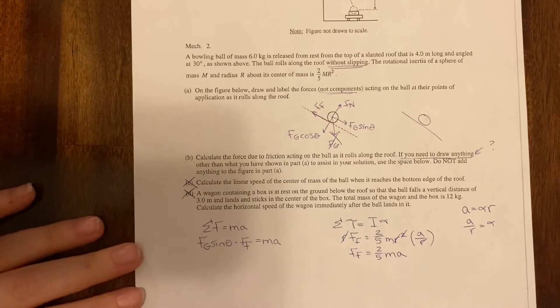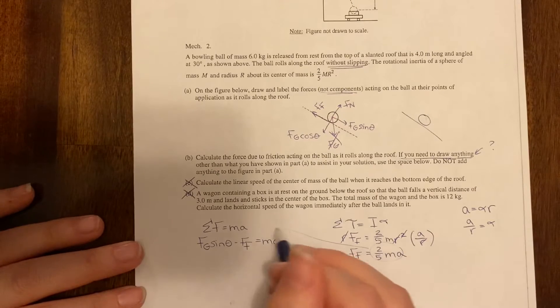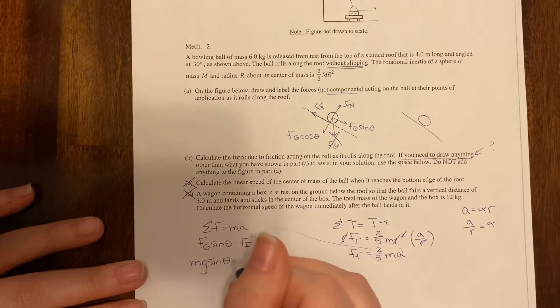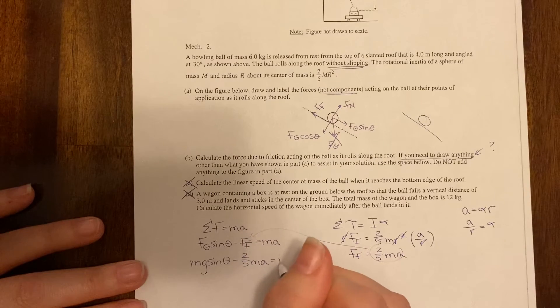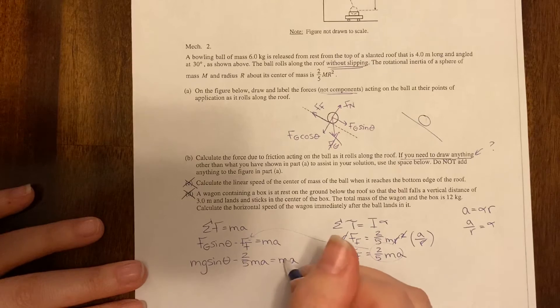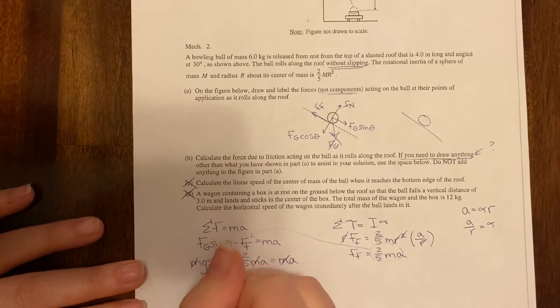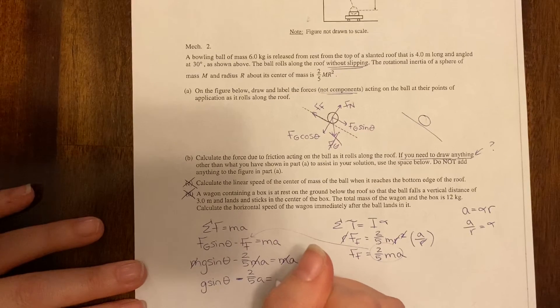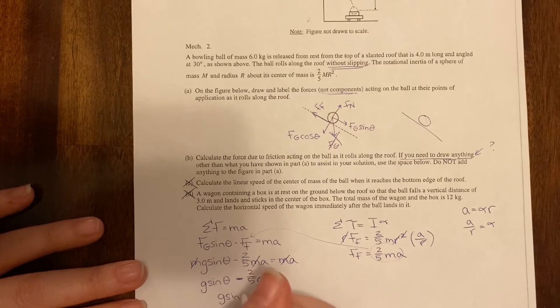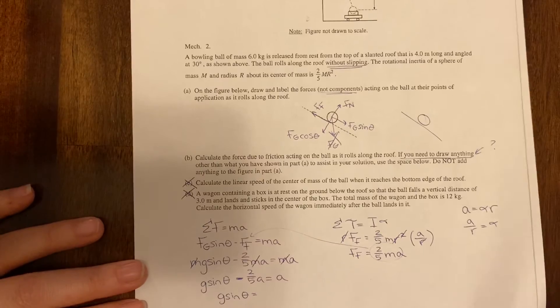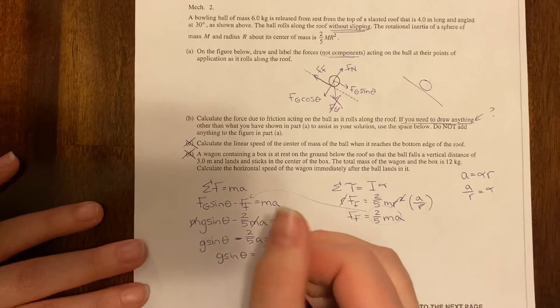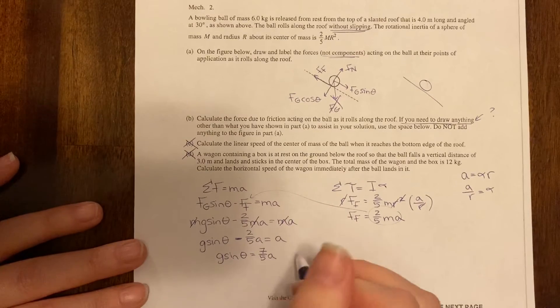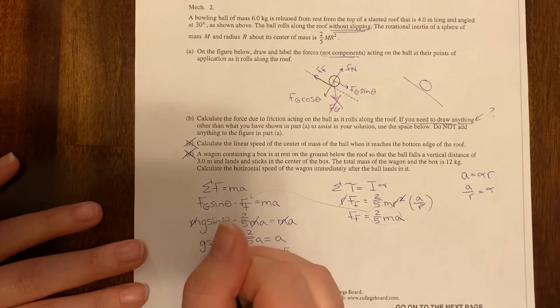All right so I'm going to come back over here and plug this in. I'm going to get MG sine theta minus two-fifths MA equals MA. G sine theta is equal to, if I add one plus two-fifths or five-fifths plus two-fifths I get seven-fifths A. Or if I multiply by five-sevenths to move this to the other side, I get five-sevenths G sine theta is equal to A.